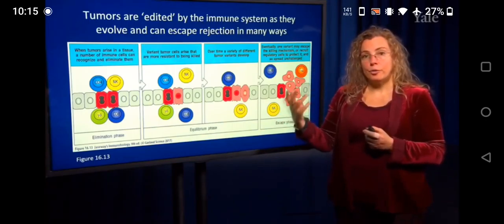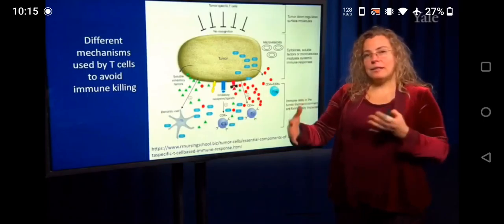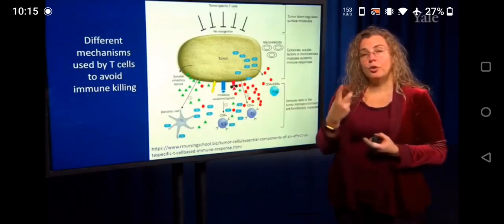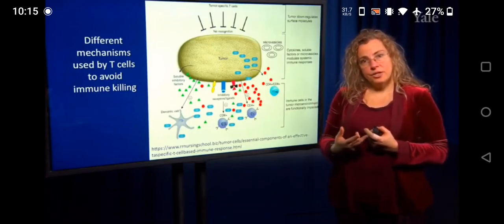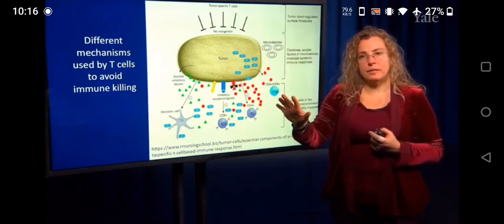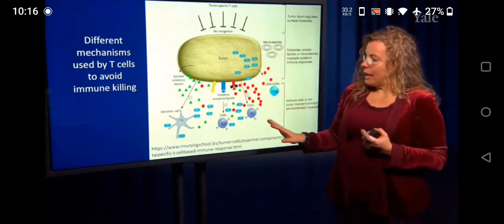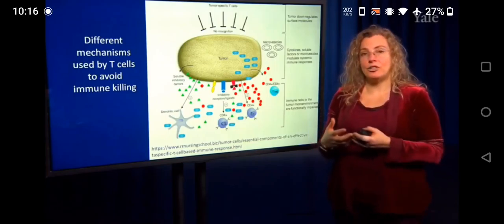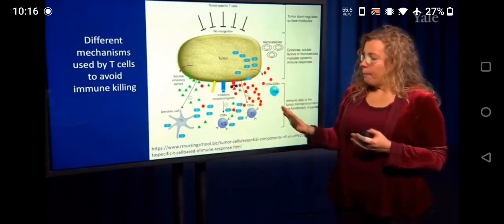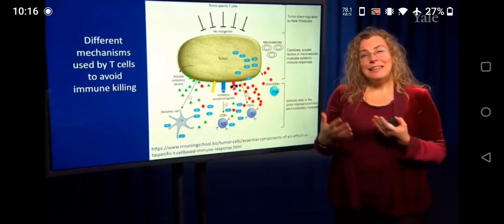Another way to sum this up on one slide: you have two main problems with immune recognition. You can have that there's nothing on the tumor that the immune system can see — no recognition. Or you can have T cells that have seen peptides presented on MHC that they want to respond to, and they're there at the tumor wanting to eliminate it, but they're being suppressed by cytokines or other regulatory cells. You need to think about those two problems differently because how we might tackle them is going to be very different.